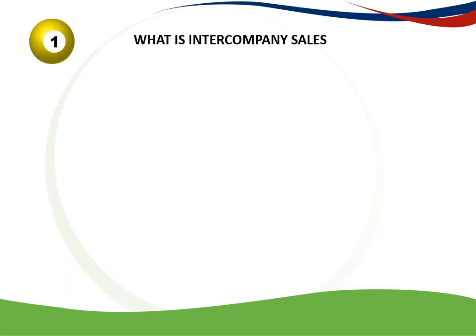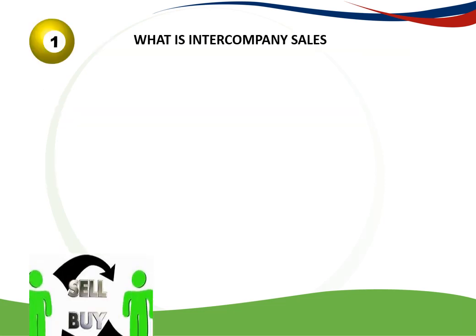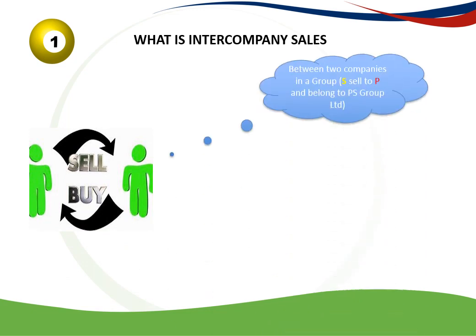So what is Intercompany Sales? This is when two entities in a group buy inventory from each other. In other words, in a group, let's say there's S, the subsidiary, and a parent, P. I'm just going to refer to them as S and P in this video. If S sells to P or P sells to S, we refer to it as an IntraGroup Transaction.